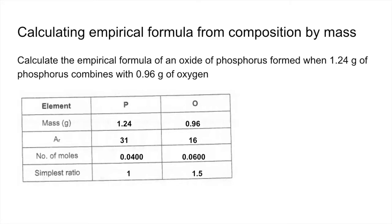Now what we can't do is round that 1.5 up to 2. So we have to multiply out. So we're going to multiply both of these by 2. And that's going to give us the simplest whole number ratio, 2 to 3. So the empirical formula for this compound is P2O3.